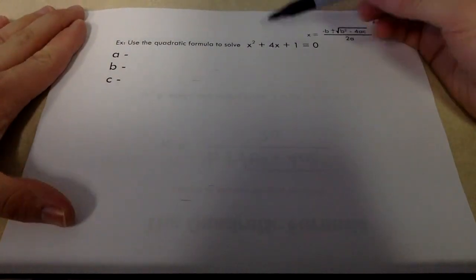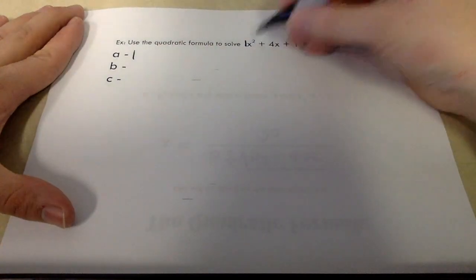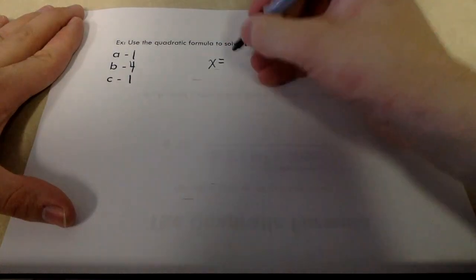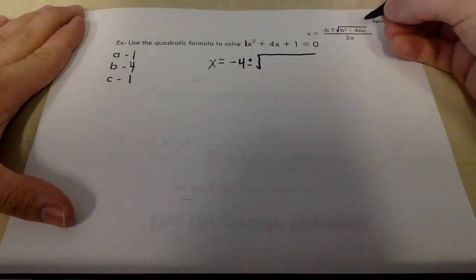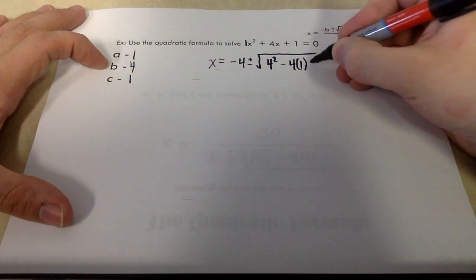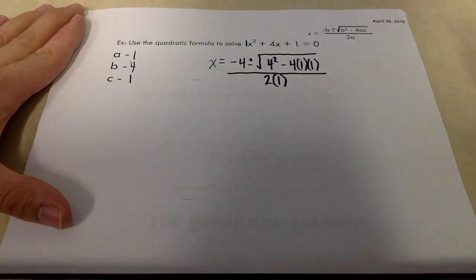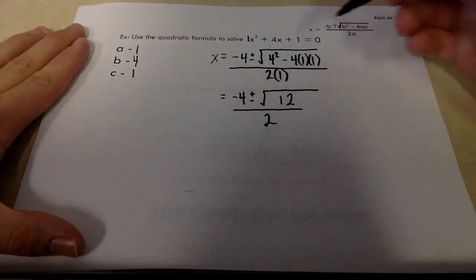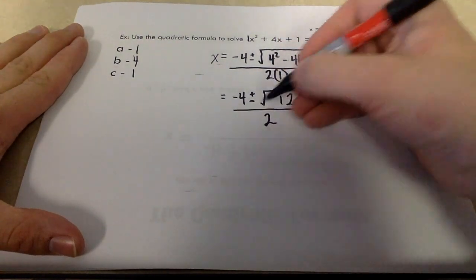So first one says use the quadratic formula to solve this quadratic equation. We know that our a value is 1 because it's the number in front of x squared. Our b value is 4 and our c value is also 1. So what we're going to do is just sub these numbers into our formula. So we've got negative b, so that's going to be negative 4. We've got plus or minus the square root of b squared. Well, b is 4. So 4 squared minus 4 times a times c. That's just going to look like this. A and c are both 1. And we're going to divide by 2 times a, which is also 1. Let's just kind of clean this up a little bit.